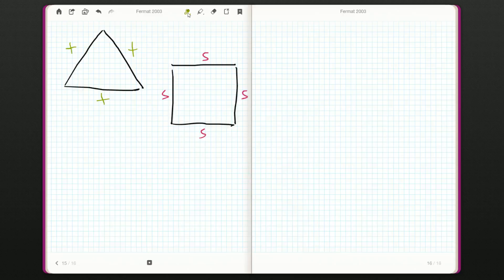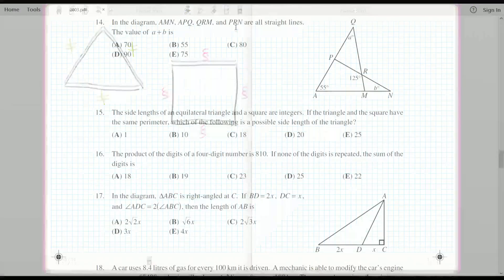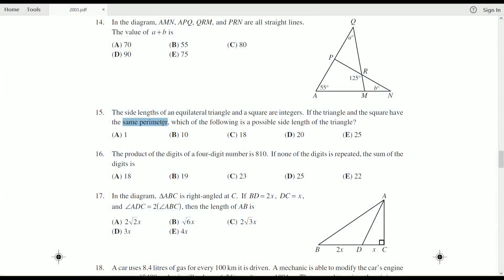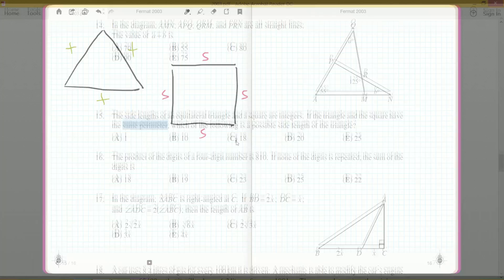Okay, now we're told that the perimeter of these two is the same. We've got that in the question right there. They have the same perimeter. Well, how do we calculate the perimeter of a triangle and of a square? We just add up all the side lengths.